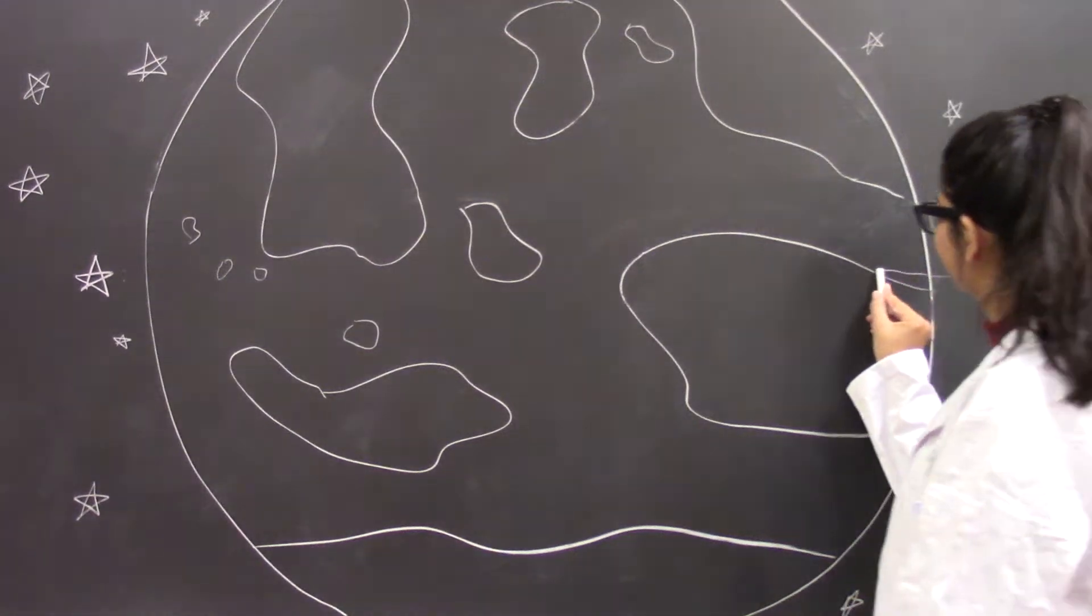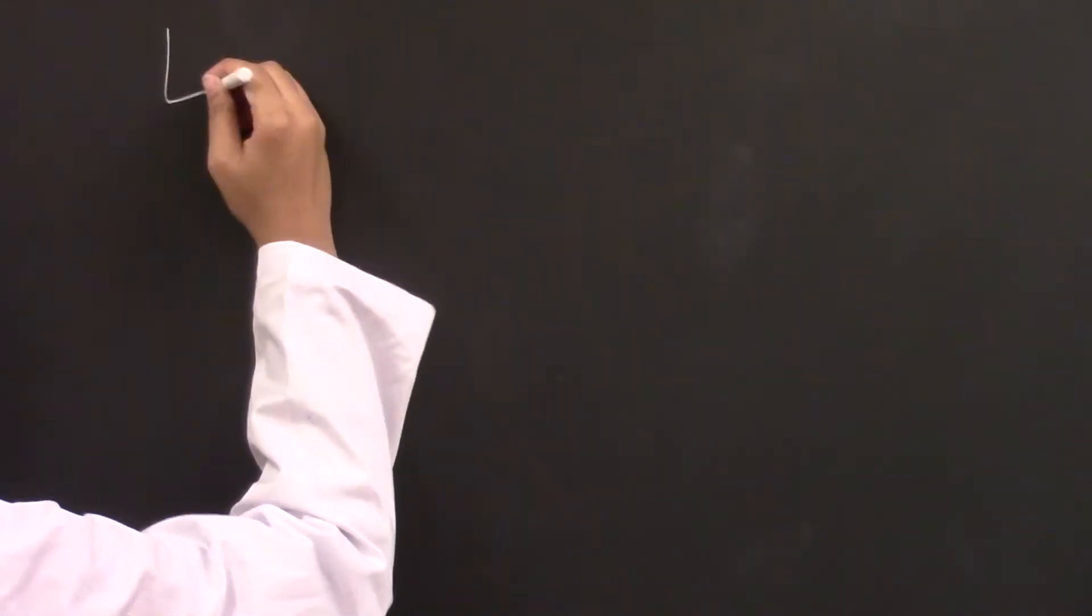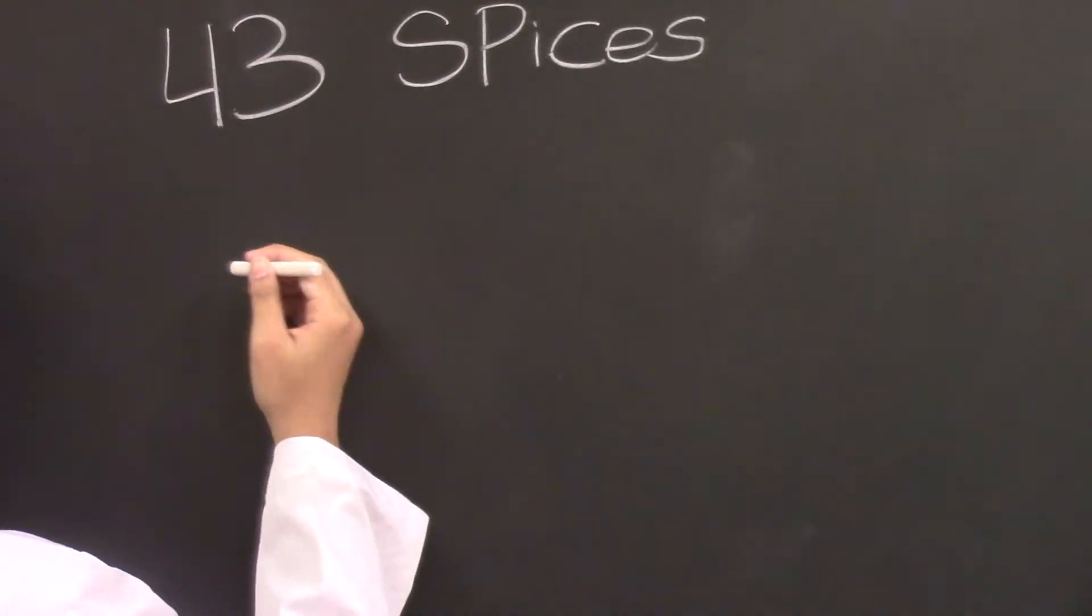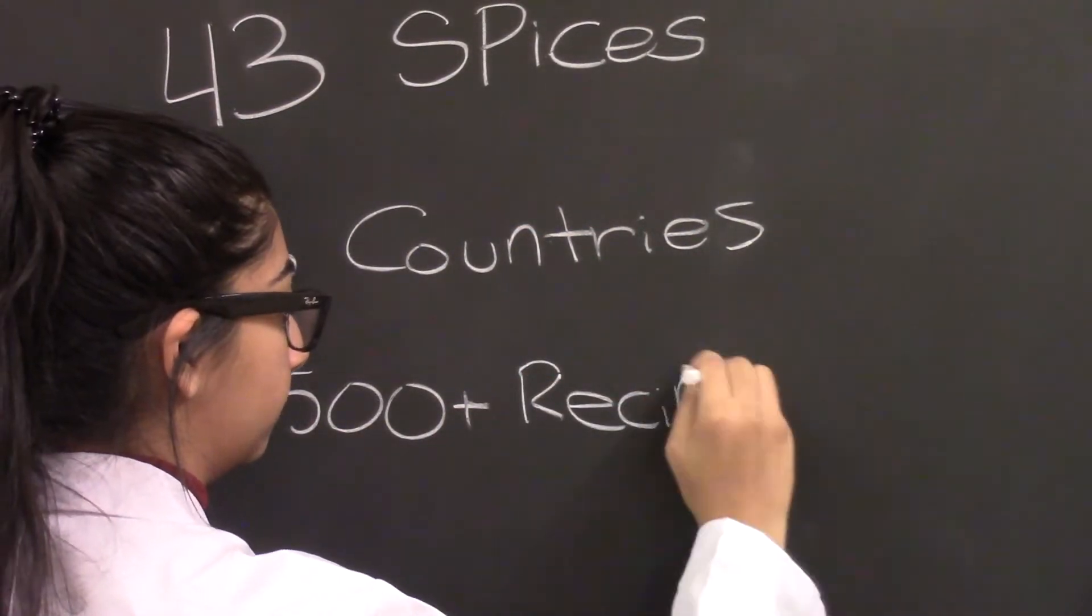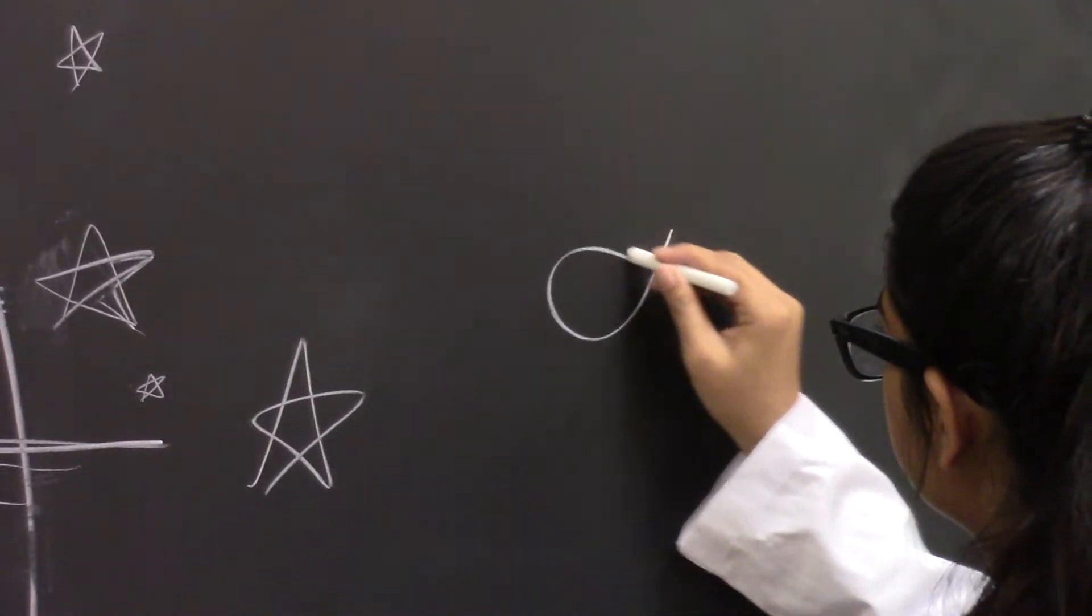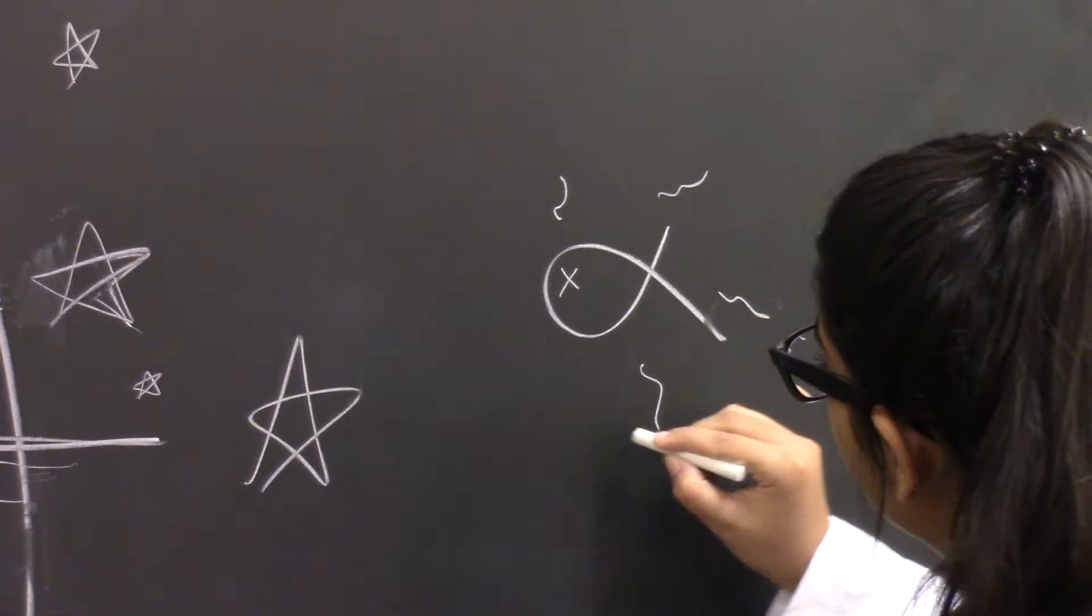First, it seems people living near the equator have the highest preference for spicy food. One study looked at 43 spices in meat-based cuisine of 36 countries, over 4,500 recipes analyzed, where the hypothesis was that spices kill and inhibit food spoilage, therefore it is more important in hot countries.